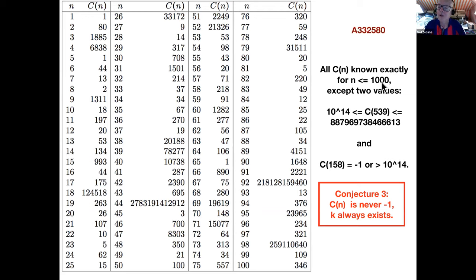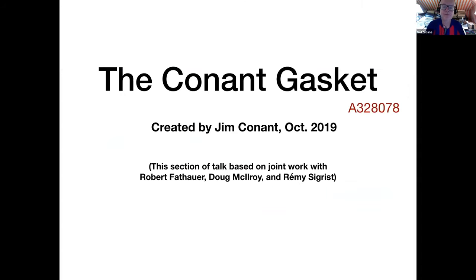We've gone out to a thousand now, and we know the values of C(n) for all numbers, except two cases. We know C of 539, which is a tough one. It's at most this 15 digit number. It could be less, but it probably isn't, but we know it's at least 10 to the 14. And C of 158, we have not found any candidate that works. So it's either minus one or at least 10 to the 14. The conjecture is that it does exist. We conjecture that this number always exists. It's a mystery. That's the end of the second segment.